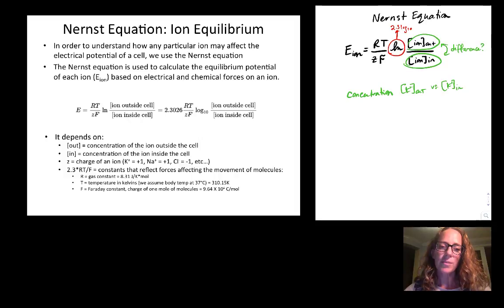The other variables that affect the chemical gradient are R and T. R is the gas constant, which is 8.31 joules per Kelvin per mole. T is the temperature in Kelvin. We're going to assume body temperature. So if we assume body temperature, then T is going to be 310.15 Kelvin.